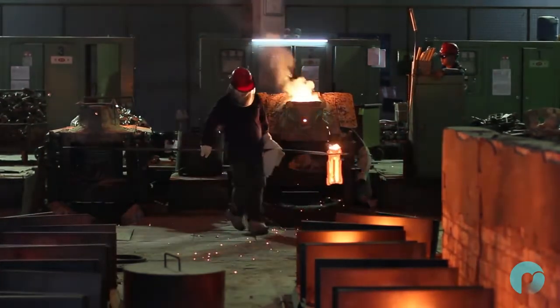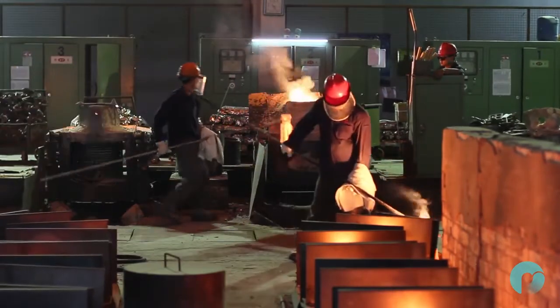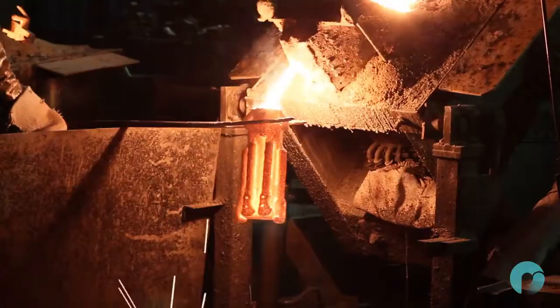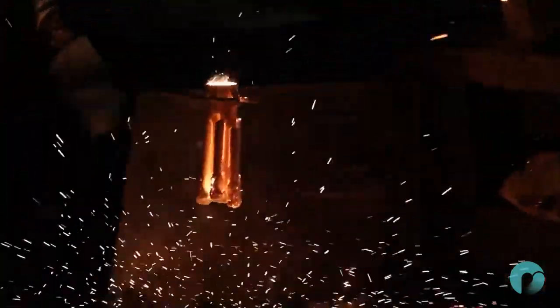Any scum and impurities are scraped off the surface and discarded. The stainless steel is heated to 1612 degrees Celsius, and the molds are preheated to 1300 degrees Celsius.